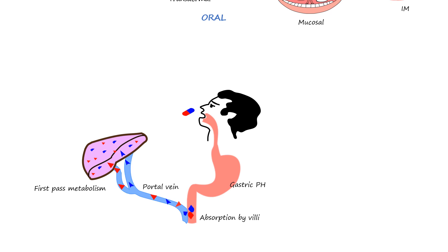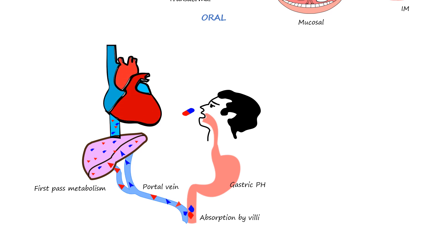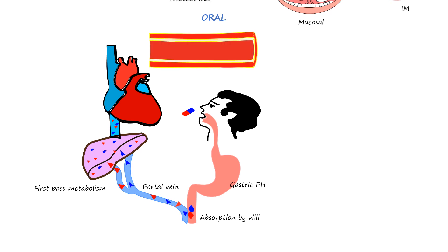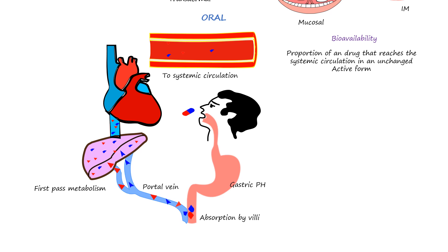In the liver, a portion of the drug is metabolized or broken down by liver enzymes, which can significantly reduce the amount of active drug. Once the drug leaves the liver, it enters the inferior vena cava, which carries it to the heart. The heart then pumps the drug into the systemic circulation, distributing it throughout the body. During this entire process, the proportion of administered drug that reaches the systemic circulation in an active form is reduced.